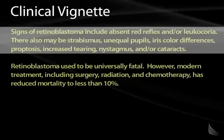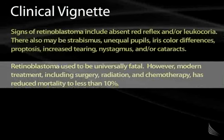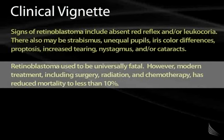Signs of retinoblastoma include absent red reflex and/or leukocoria, strabismus, unequal pupils, difference in iris color, proptosis, increased tearing, nystagmus, and/or cataracts. Retinoblastoma used to be universally fatal, but with modern treatment including surgery, radiation, and chemotherapy, mortality has been reduced to less than 10%.